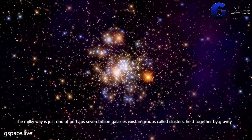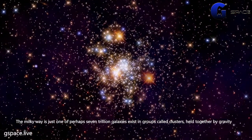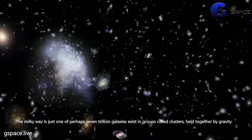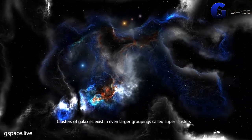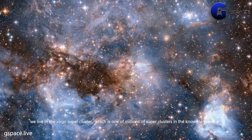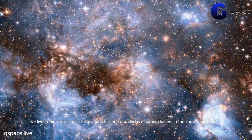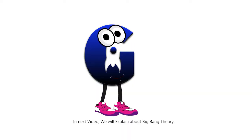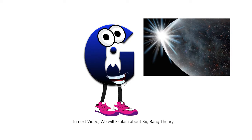Superclusters: clusters of galaxies exist in even larger groupings called superclusters. The Virgo supercluster is one of millions of superclusters in the known universe. In the next video we will explain about Big Bang theory.